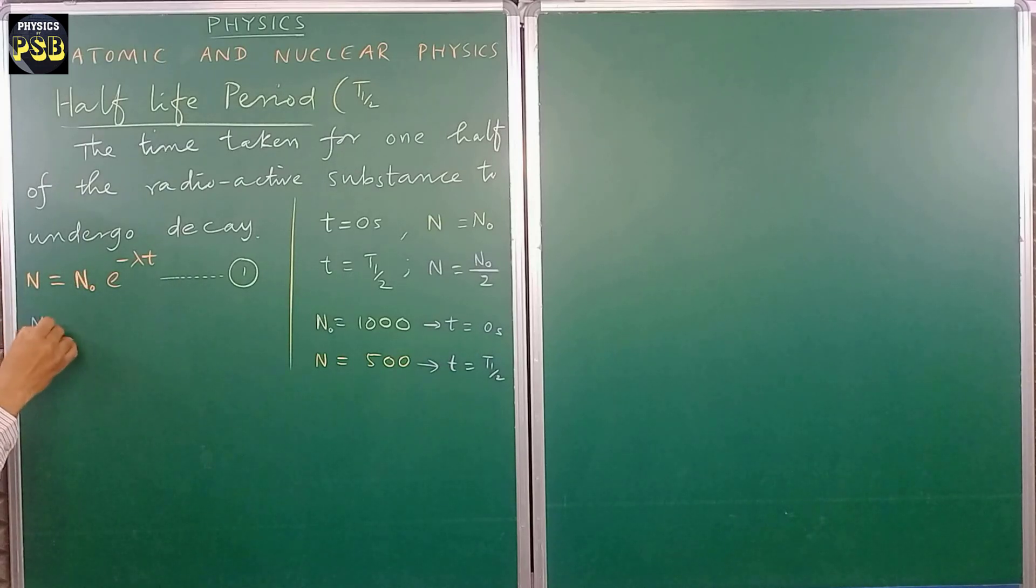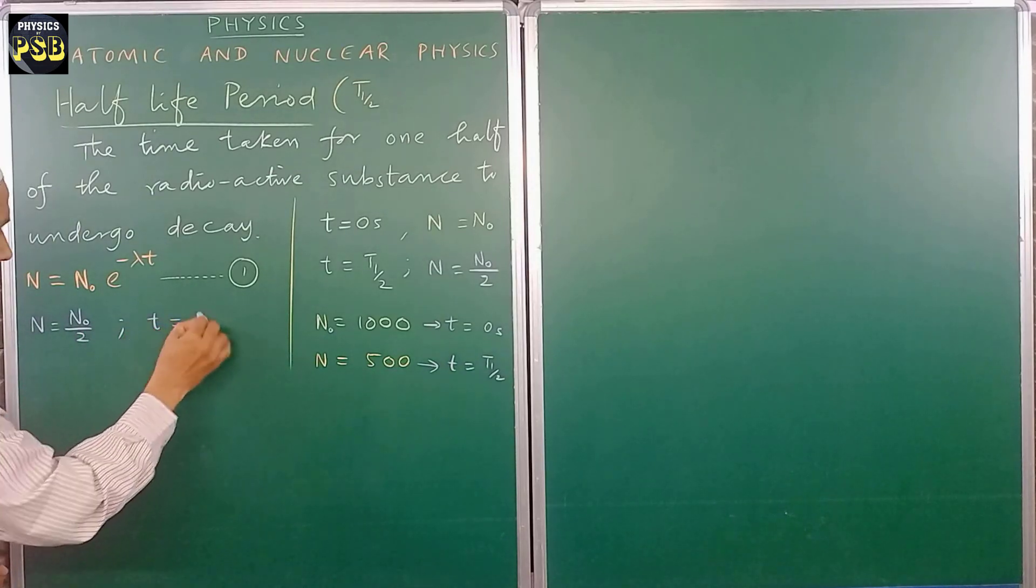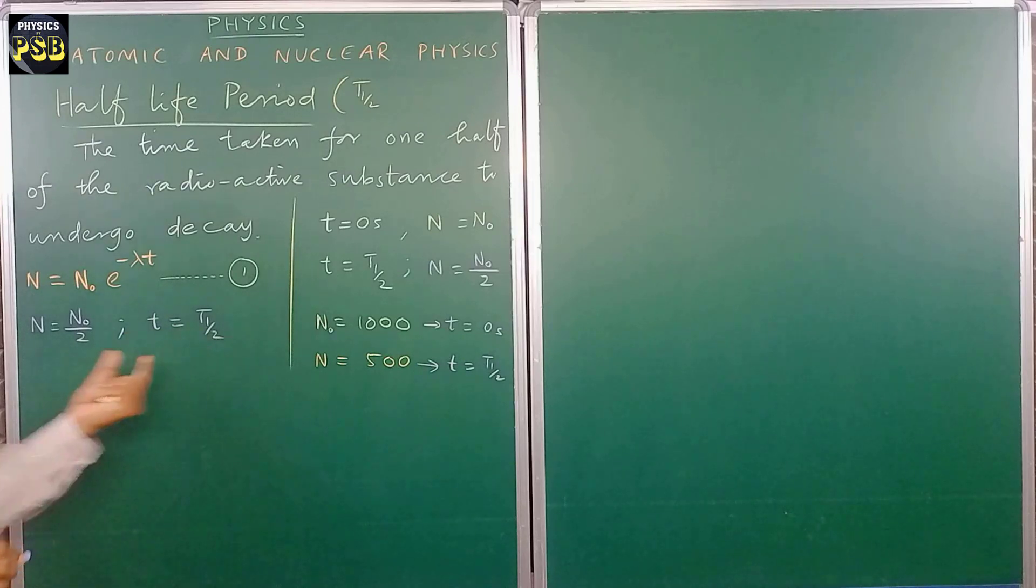Then here I'll take N equals N naught divided by 2. This is at time t half. When the time is t half, then N will be equal to N naught divided by 2.